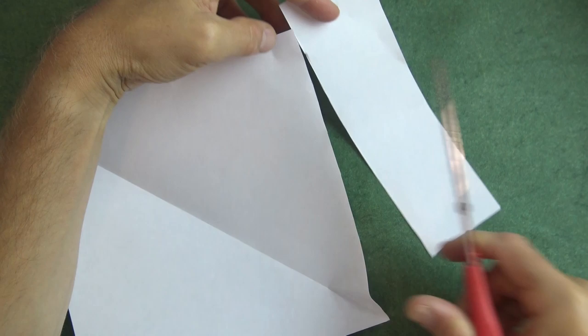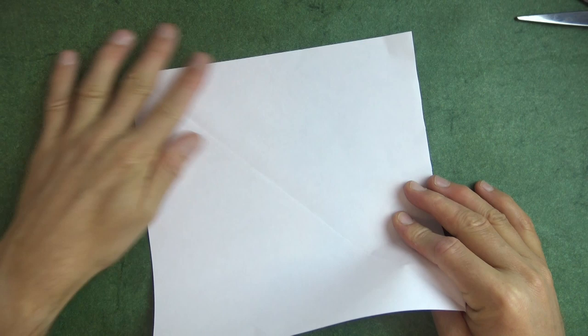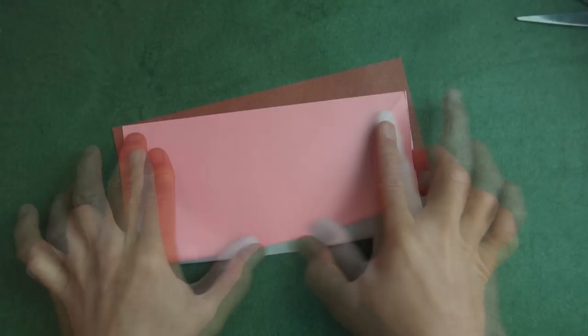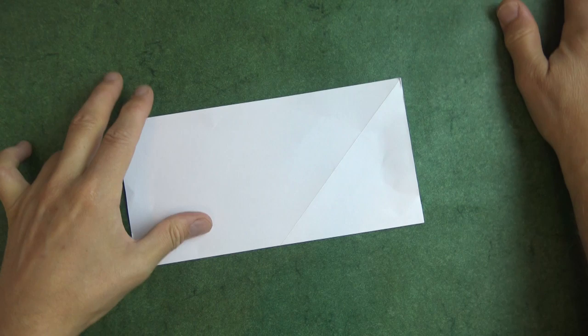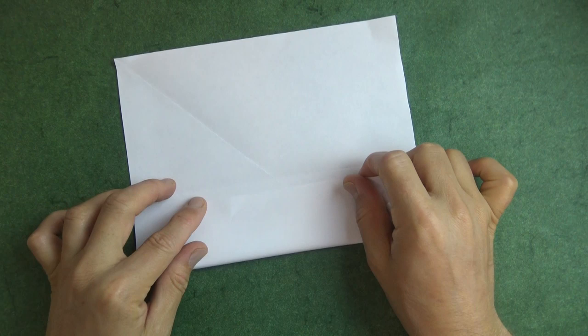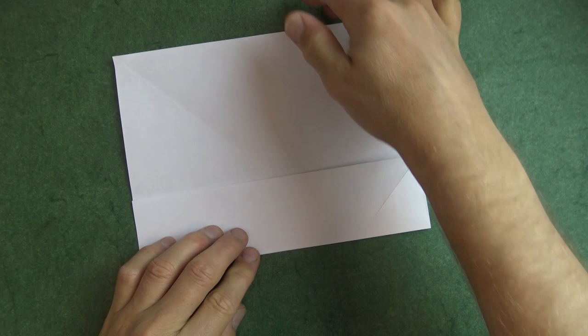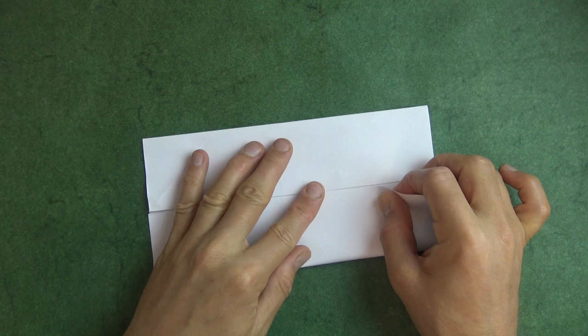Discard this extra paper and we're ready to start. Let's fold a pinwheel base. So fold in half. If you're using paper colored on one side, then begin white side up and fold in half and unfold. And fold this edge to the crease, rotate and repeat on this side.